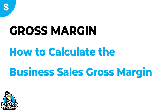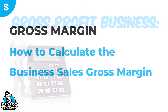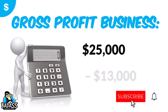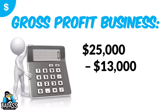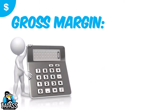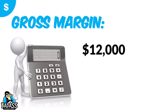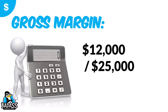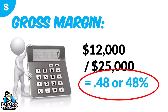Let's look at an example using the total business. Say a business does $25,000 in sales and their cost of goods is $13,000 — that means their gross profit dollars are $12,000. Sales minus cost of goods leaves them $12,000. Now to figure out their gross margin, we take those $12,000 of gross profit dollars and divide by total sales of $25,000, which comes up to 0.48, or 48%. So this business's gross margin was 48%.